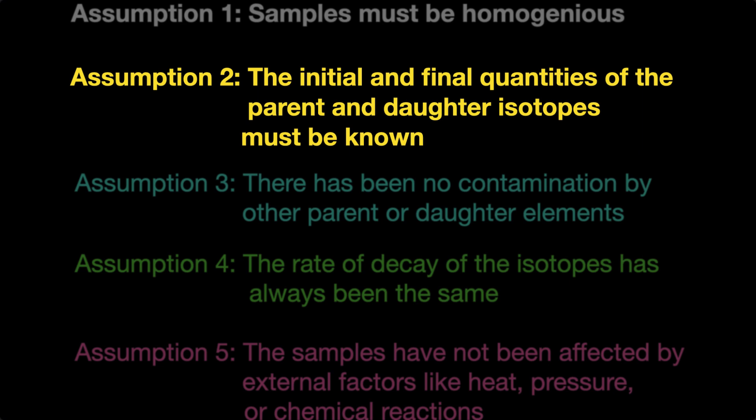As we've already seen, one of the key problems for the radiometric dating fiasco is the second assumption: the starting conditions. We can measure the final ratios of the isotopes, but we can never measure them at the start.